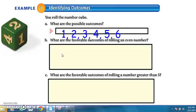What are the favorable outcomes of rolling an even number? So my event is rolling an even number, and I want to know specifically what I need to roll, which will be my favorable outcome. To roll an even number, I could roll either a two, a four, or a six. So there are three favorable outcomes to rolling an even number.